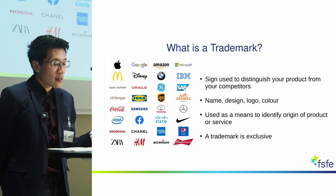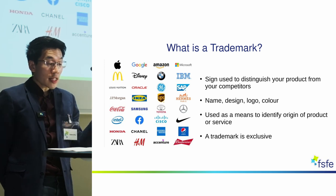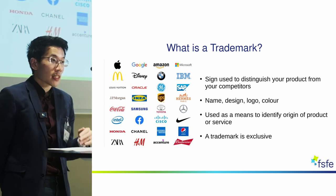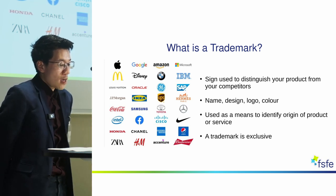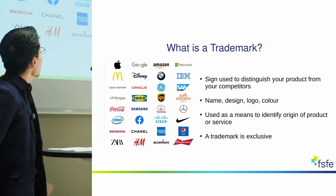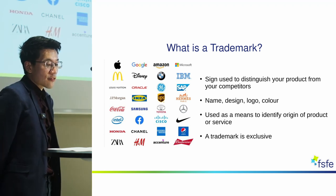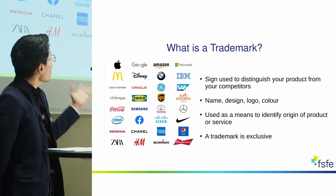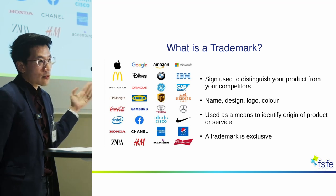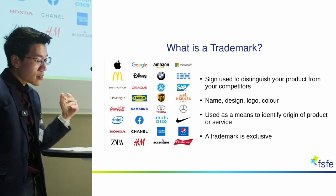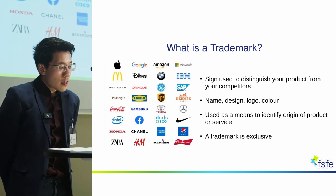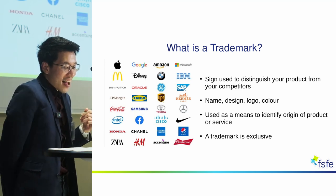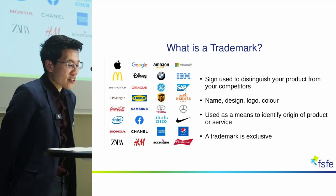By recognizing the trademark, users or customers can identify which product or service originates from a particular source or company. You can see examples of various trademarks up on the slides that I'm sure you're familiar with. The logo of a company can be a trademark — for example, the yellow M of McDonald's or the swoosh for Nike. But also the name itself — the name Nike is a trademark, as is the name McDonald's, for their respective industries.